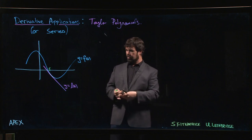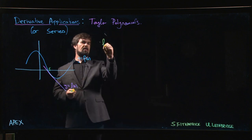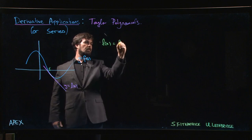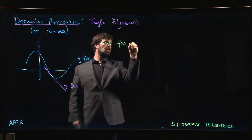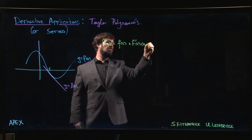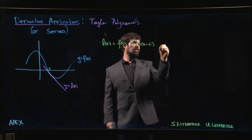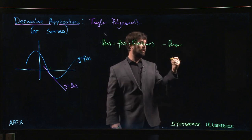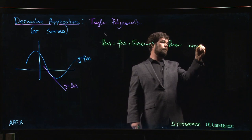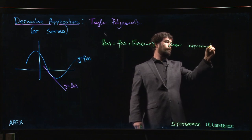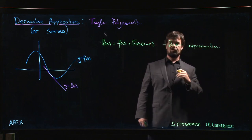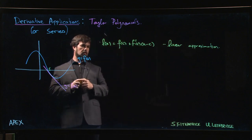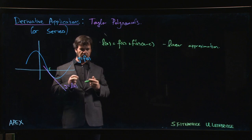We know that if we have this l(x), this is going to be f(c) + f'(c) times (x - c), and this is the linear approximation. The next thing you might ask is: can we do something like, let's call it q—q for quadratic?